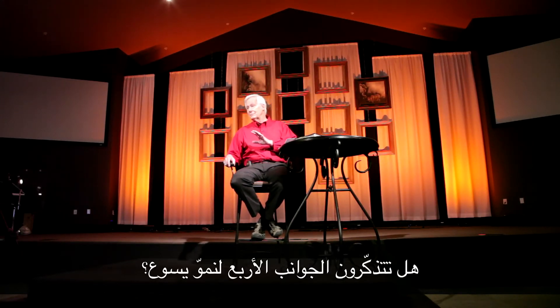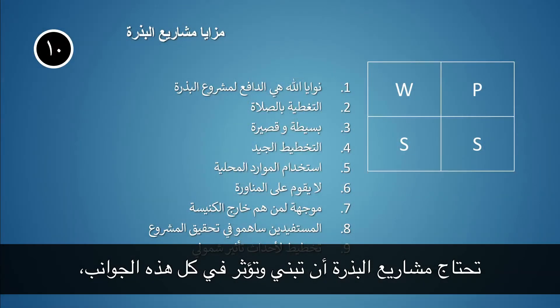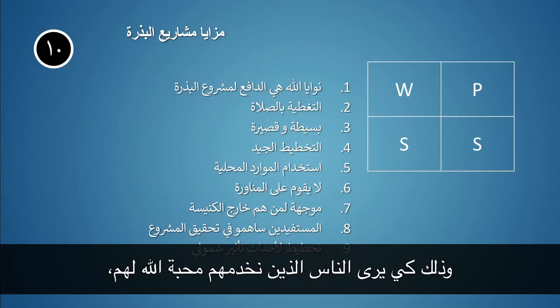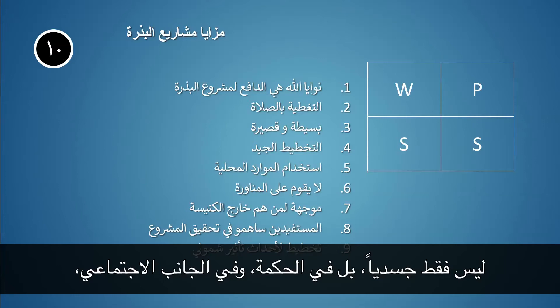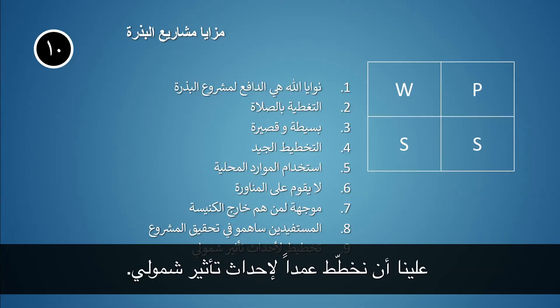Number nine: remember the four areas in which Jesus grew — wisdom, physically, socially, spiritually. Our seed project needs to build in impacts in all of those areas so that the people being served can see God's love for them, not just in the physical area but in wisdom, the social area, and the spiritual area as well. We need to intentionally plan for a holistic impact.